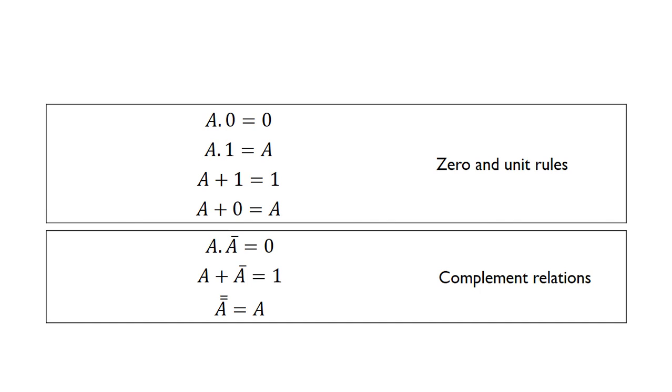These are pretty straightforward and they just come from the AND and OR gate truth tables. A AND 0 will give us 0 because anytime one of the inputs is 0, the output will be 0. A AND 1 just gives us A. For the OR gate truth tables, A OR 1 will give us 1, as long as one of the inputs is 1, it doesn't matter what the other one is. Similarly, if we've got A OR 0, that's going to give us A.